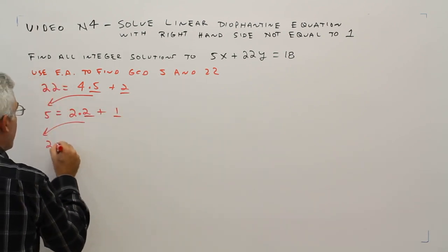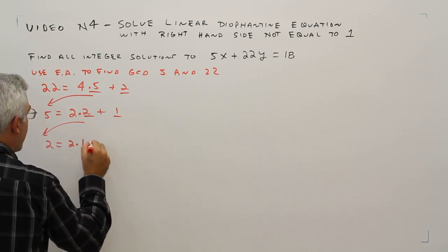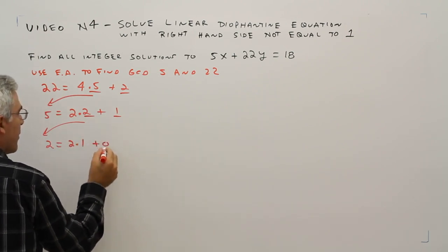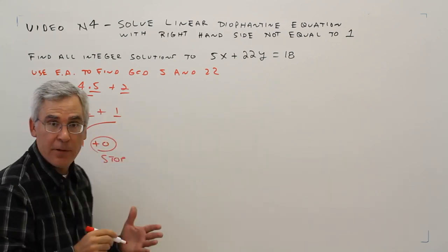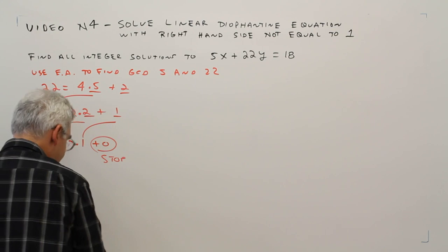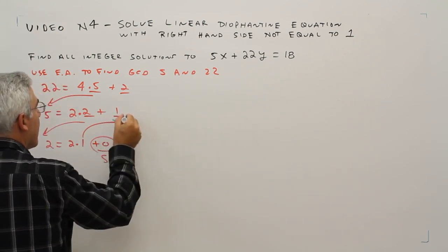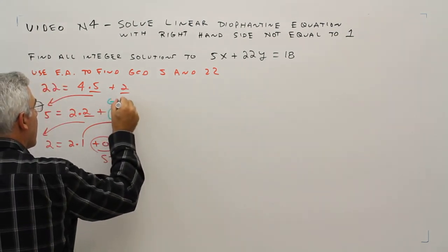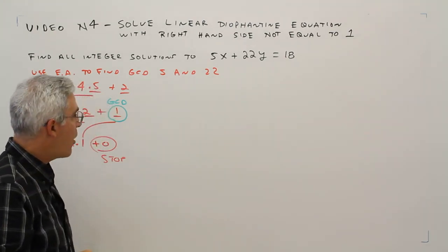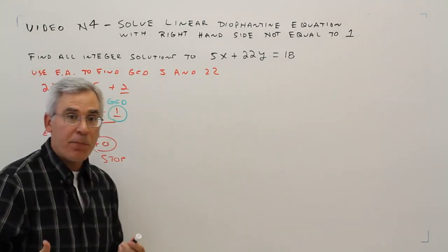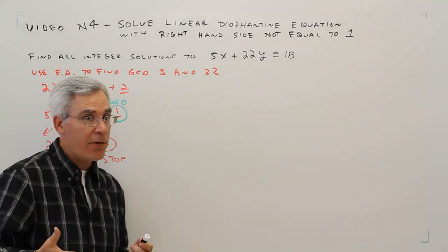2 equals 2 times 1 plus 0. Stop. And then the GCD once again is 1. The next step is to use the Euclidean algorithm in reverse.